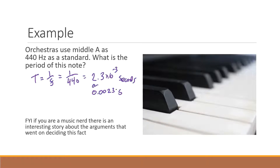If you're a music fan, there's an interesting historical story about this. Back in the 1920s, there were lots of arguments between orchestras — some said A should be 432 Hz, others said 437 Hz, some said 450 Hz. The French got very upset about it. Now we all agree that A should be 440 Hz. This example just shows how you can convert between frequency and period.